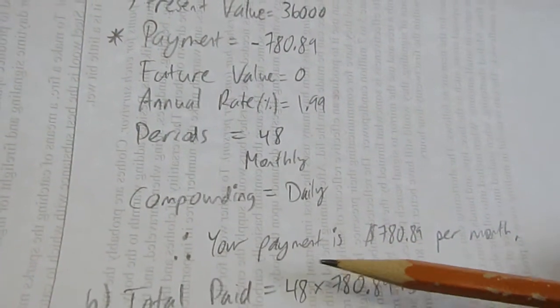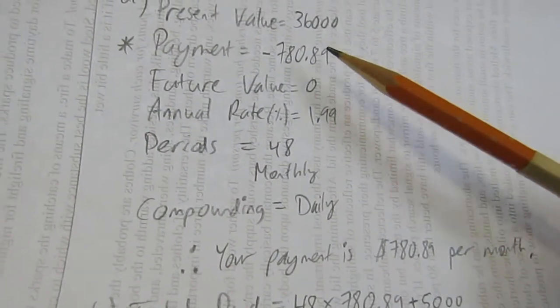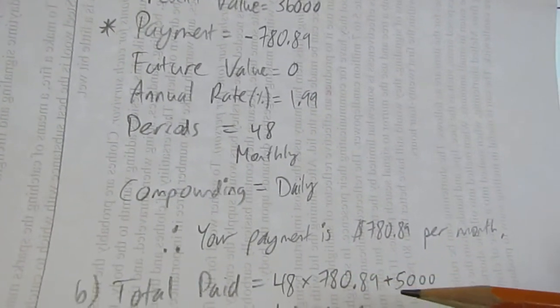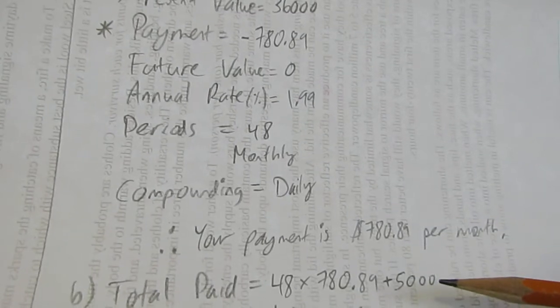Your total paid is how much you spent, $780.89 times 48, but you also have to add on the cash upfront, $5,000, that down payment.